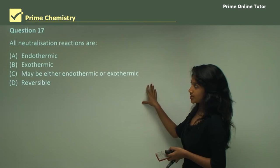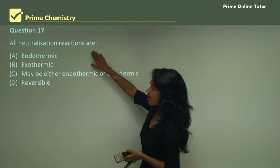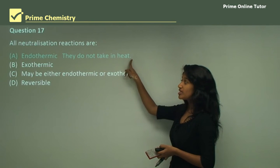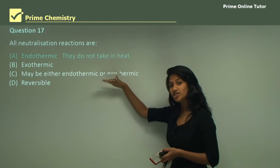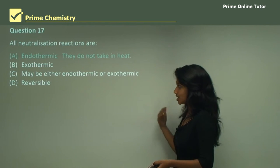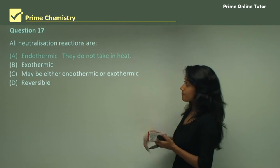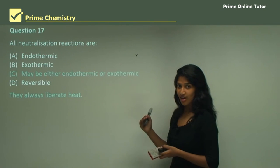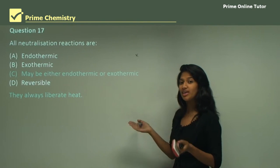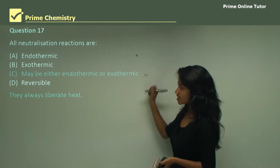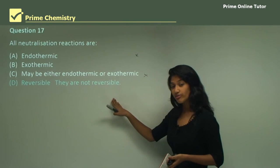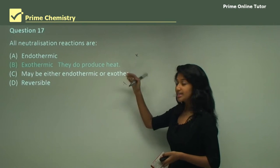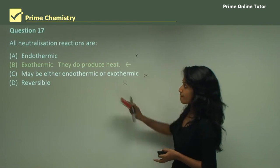Question 17 is a multiple choice question: all neutralization reactions are — A: endothermic, B: exothermic, C: may be either endothermic or exothermic, D: reversible. Neutralization reactions liberate heat, so they are not endothermic (A is wrong). They must be clearly one or the other, so C is wrong. They are not reversible equilibrium reactions, so D is wrong. Because they produce heat as a product, B — exothermic — is the correct answer.